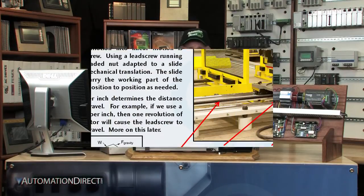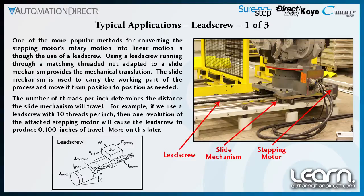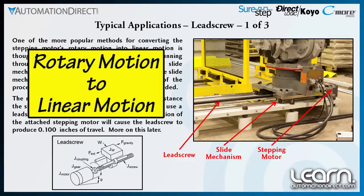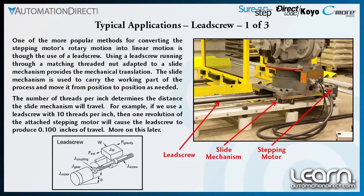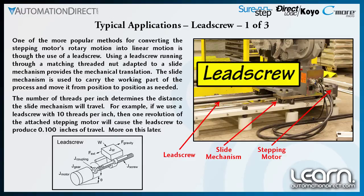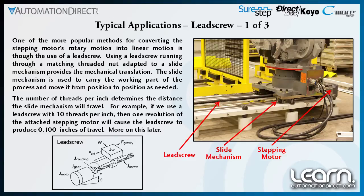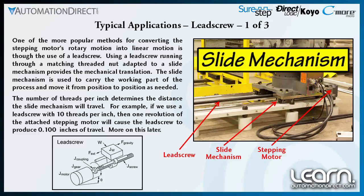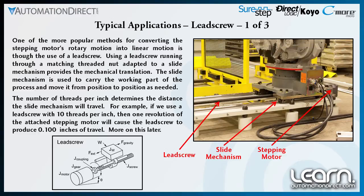One of the most popular applications using a stepping system for motion control involves converting a stepping motor's rotary motion into linear motion. This is accomplished with the use of a lead screw. As the lead screw rotates, a matched threaded nut that is mechanically adapted to a slide mechanism moves the slide along guides. The slide usually rides on two rods with rotating ball bearings attached to the slide.